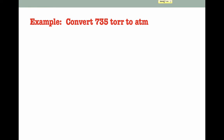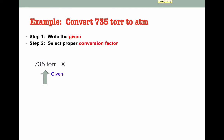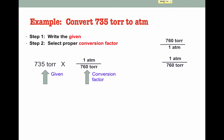Let's look at an example for pressure conversion. Here we're asked to convert 735 Torr to ATM. We start by writing the given: 735 Torr. Then we select a conversion factor. We have two options: 760 Torr over 1 ATM, or 1 ATM over 760 Torr. We want the unit we're canceling on the bottom, so we go with 1 ATM over 760 Torr. We cancel Torr with Torr and solve, giving us 0.967 ATM.